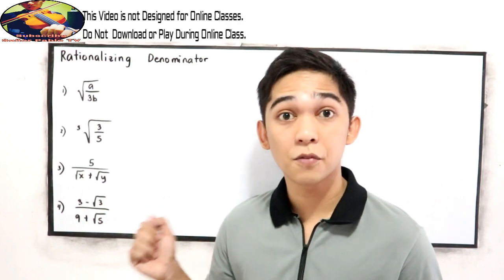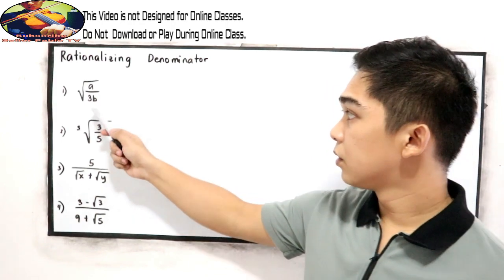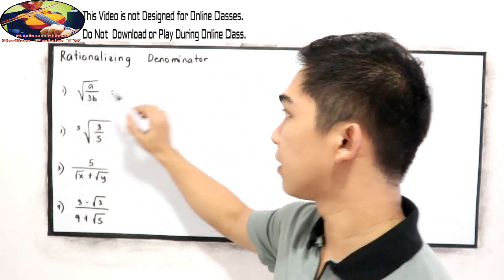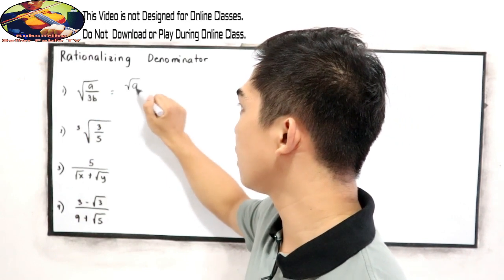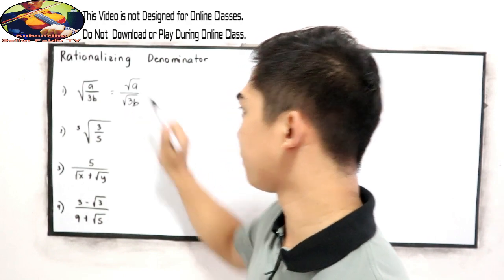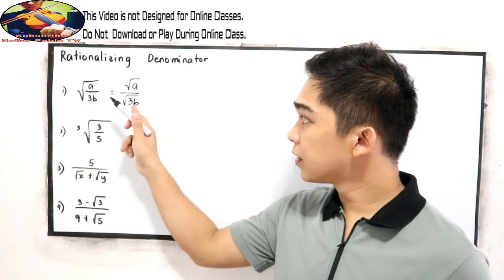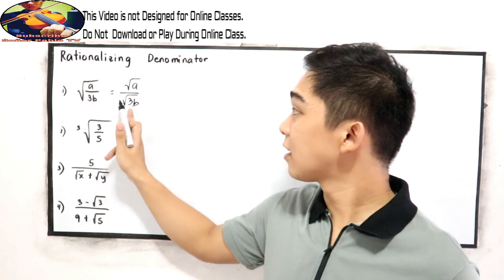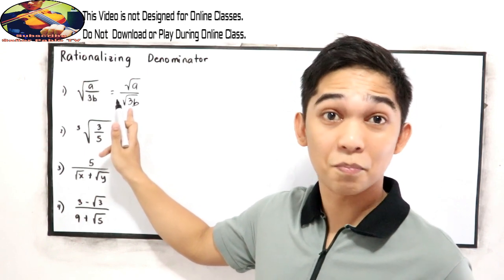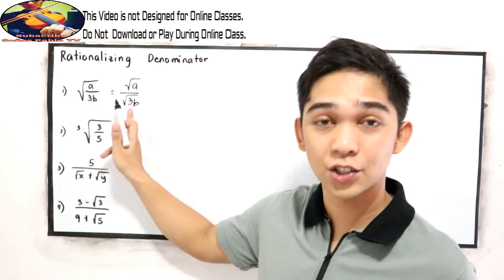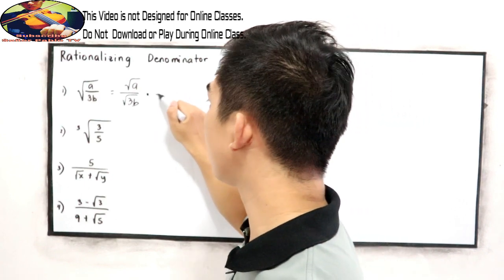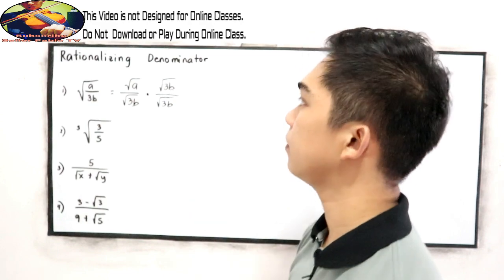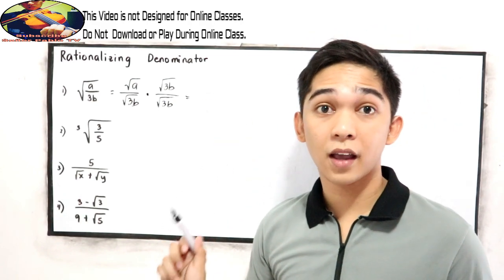Now let's solve number one. To rationalize the denominator, let us find first the equivalent of this radical. That is equivalent to the square root of a all over the square root of 3b. Next, we are focusing on our denominator. Find a radical that if we're going to multiply in our denominator will give us a perfect square expression.